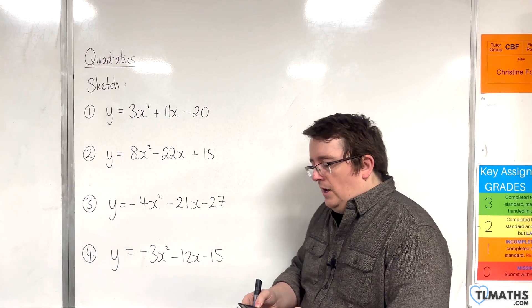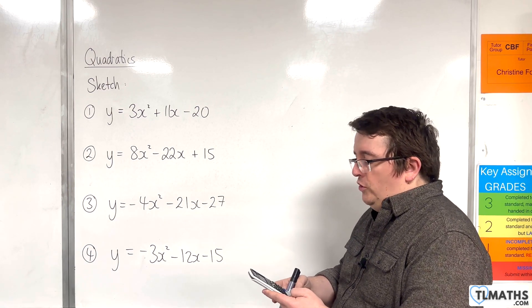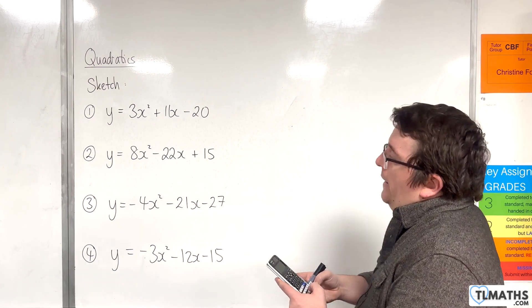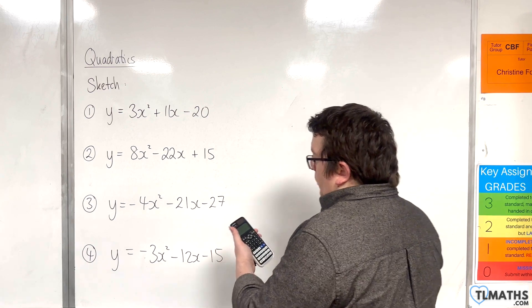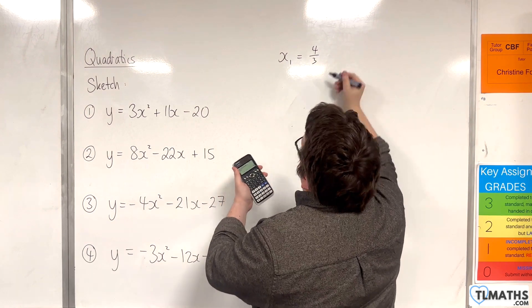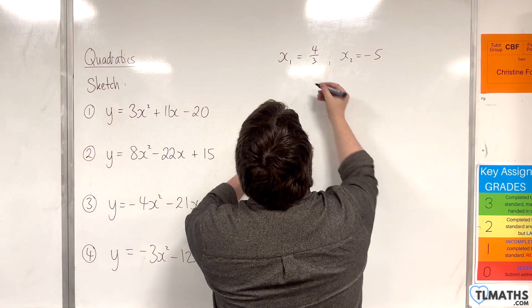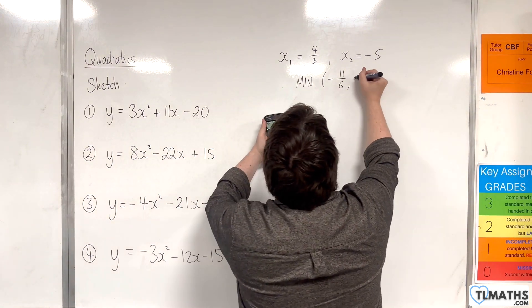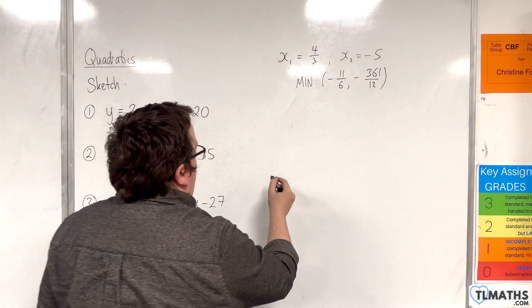Let's take a look at number one. We're going to go on to menu and scroll down to section A, equation function, then choose polynomial 2, polynomial degree 2. I type in 3, 11, and then minus 20. Lock those in, press equals. We get x₁ is 4/3, then x₂ is -5. And then I get minimum -11/6 for the x value and -361/12 for the y value.